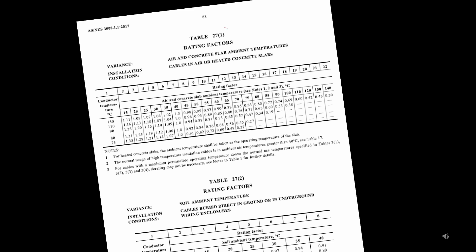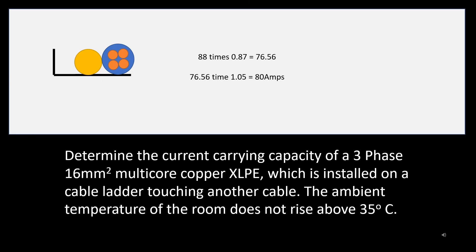So, 90 degree cable in an ambient temperature of 35 degrees gives us an uprating factor of 1.05. Which means that we can multiply the current carrying capacity of our cable by 1.05, taking our 76.56 to 80 amps.